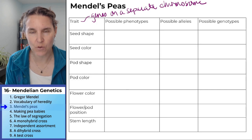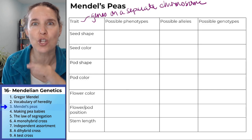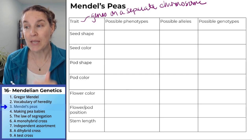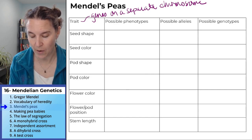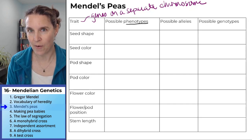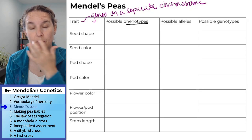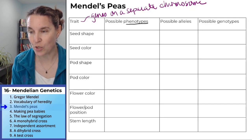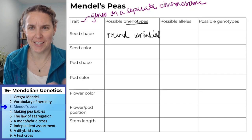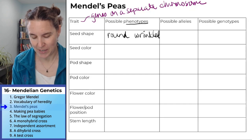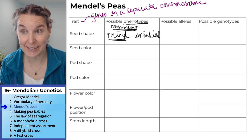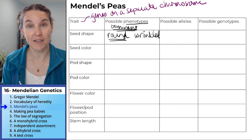You will never have to memorize this chart — I would never give you this chart and say fill it in; I've got my cheat sheet right here. I'm going to indicate when talking about phenotypes which one is dominant. I'll list the dominant trait first. For example, in seed shape, our two options are round or wrinkled. The round seed is dominant.